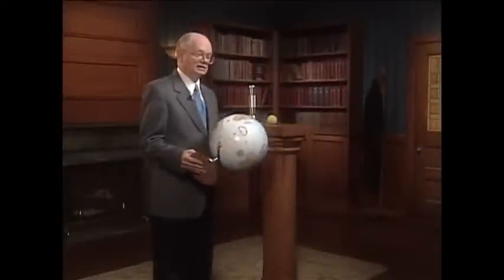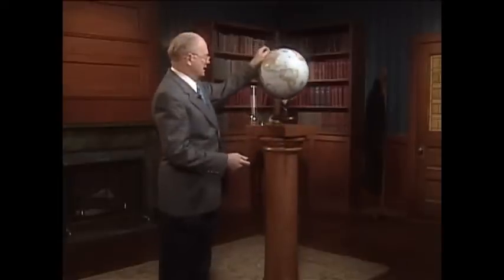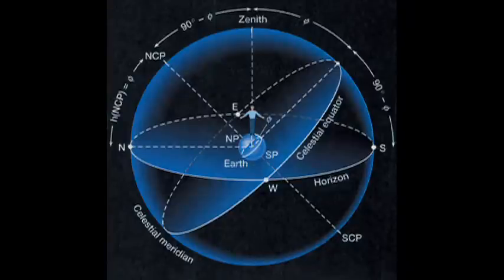Latitude is easy to measure. Longitude isn't. How do you measure latitude? You have to look at the orientation of the sky to get that. Take the Earth in your imagination and take the axis of the Earth and run it outward. As you stand out on a country evening, it looks as if you're standing in the middle of a giant sphere. It's called the celestial sphere.